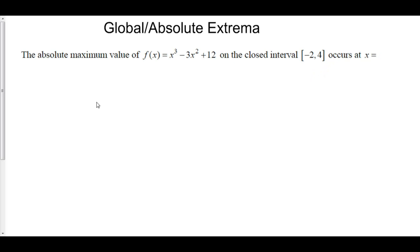We're going to find the absolute maximum value of f on the closed interval from negative 2 to 4, and we're going to find out where it occurs. So let's first find our critical points. To find the critical points, we take the derivative and see where it's equal to 0 or where it is undefined.